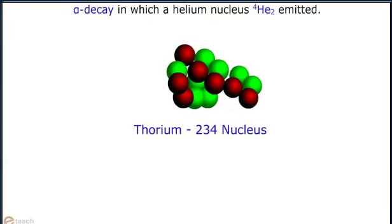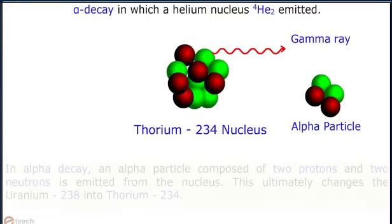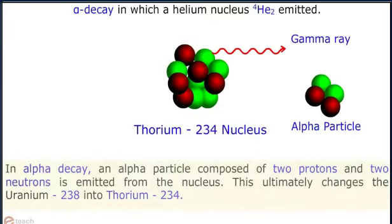First, take the case of alpha decay in which a helium nucleus 4He2 is emitted. In alpha decay, an alpha particle composed of two protons and two neutrons is emitted from the nucleus. This ultimately changes uranium-238 into thorium-234. During the conversion, gamma decay also takes place as shown.